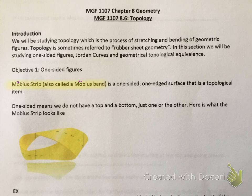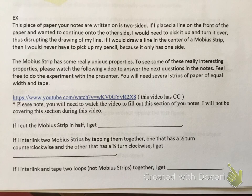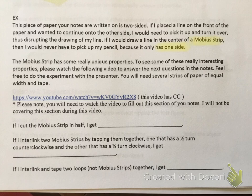Here's what a Möbius strip looks like — that yellow figure in your notes. This piece of paper you're writing on is two-sided: it has a front and a back. If I place a line on the front and wanted to continue to the other side, I'd need to pick it up, turn it over, and write the next line — creating a disruption. If I draw a line in the center of a Möbius strip, I would never have to pick up my pencil because it is one-sided.